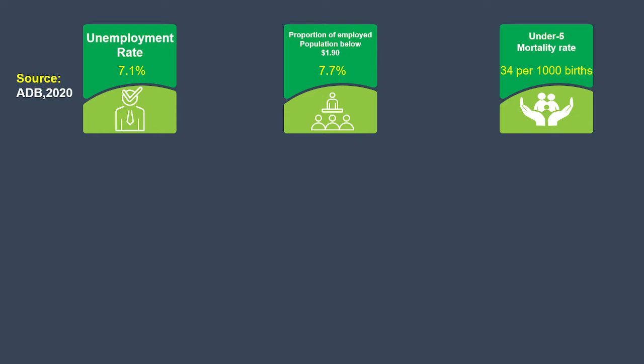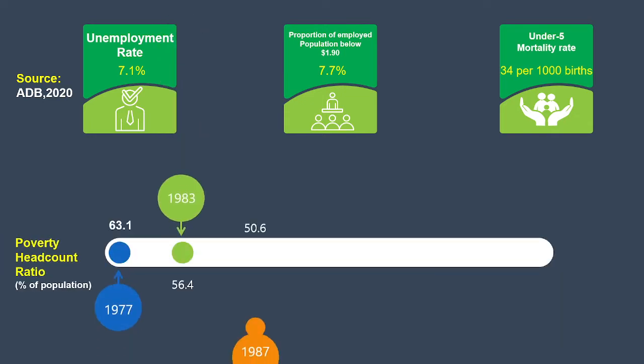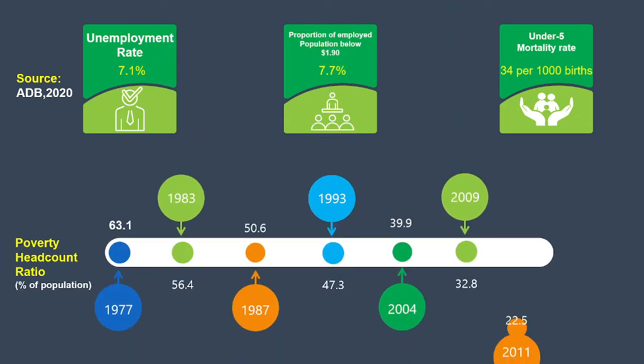Looking at the poverty headcount ratio of India from 1977 to 2011, calculated based on census data, we can see a gradual decline in the poverty headcount ratio. However, it is still a huge factor that needs to be considered. During the 2011 census, the headcount ratio was around 22.5 percent of the population.